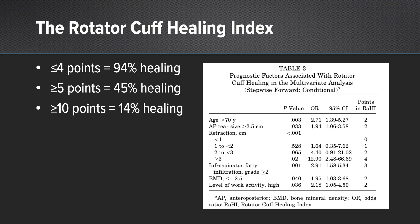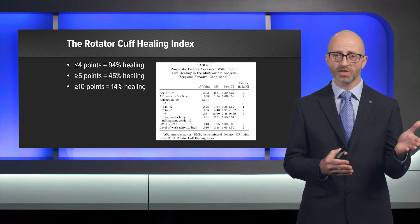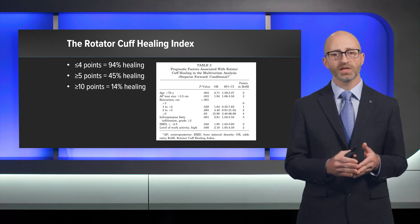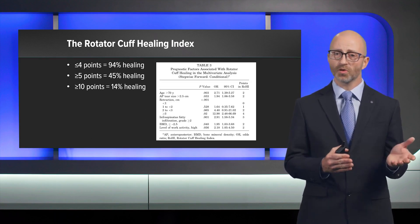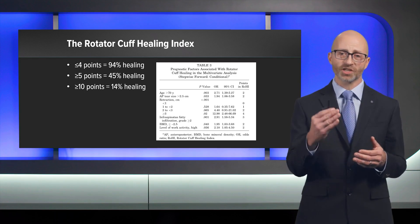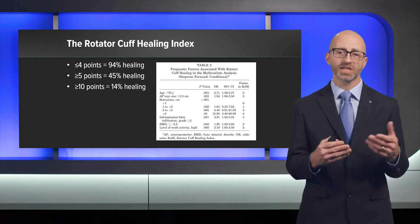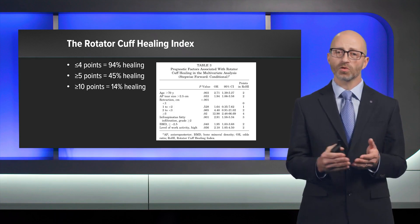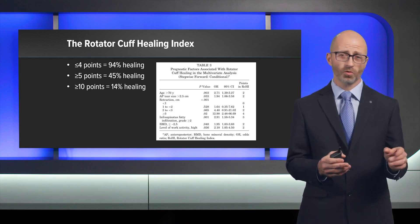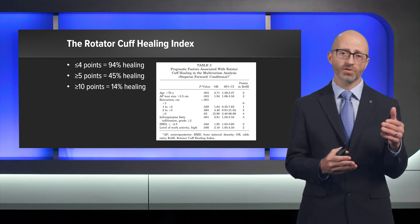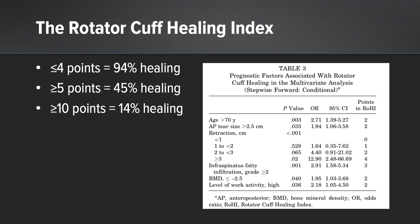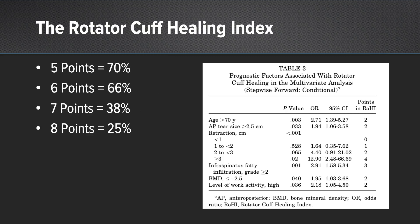The rotator cuff healing index assigns points based on factors correlated with healing: age over 70 earns 2 points; AP tear size over 2.5 centimeters earns 2 points; retraction over 3 centimeters earns 4 points total; infraspinatus fatty infiltration grade 2 or greater earns 3 points; and there are additional points for activity level and bone mineral density. Patients with 4 points or less had a 94% chance of healing; over 5 points, 45%; over 10 points, only 14%.